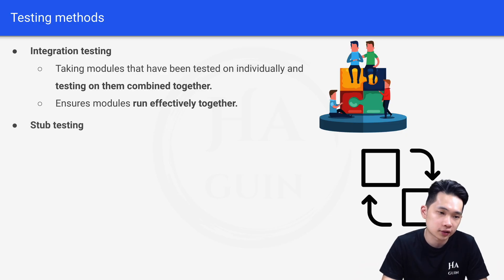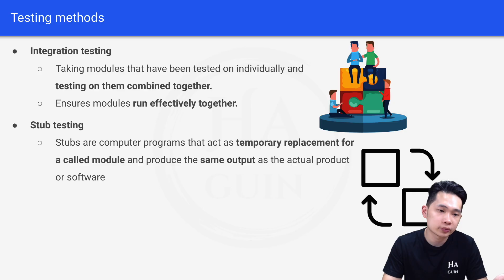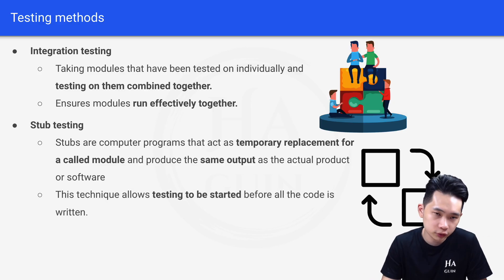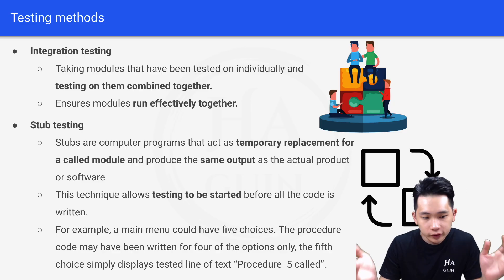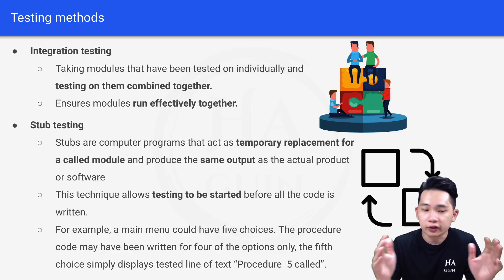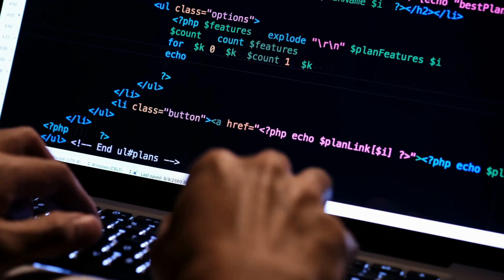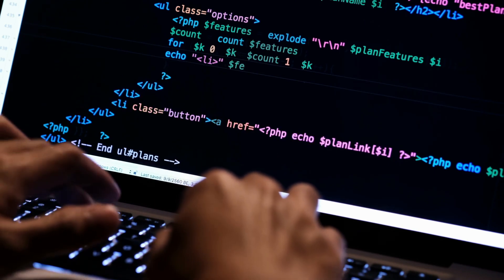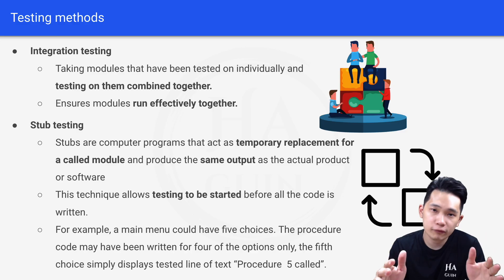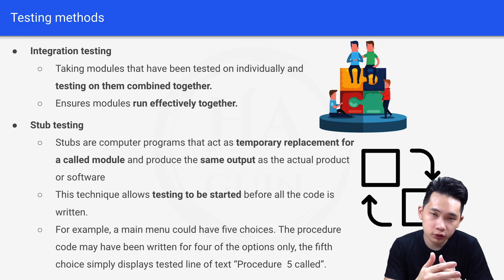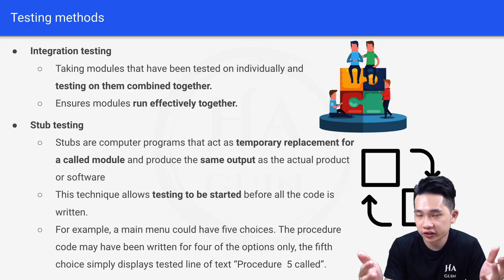Next is stub testing. Stubs are computer programs that act as temporary replacements for a core module and produce the same output as the actual product or software. This technique allows testing to begin before all the code is written. For example, a main menu could have five choices where code has only been written for four options. The fifth option would simply display a placeholder line such as 'Procedure 5 called', allowing the team to proceed with testing the other options while the fifth is still being developed.